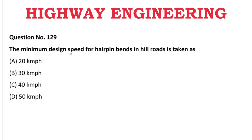Next question: The minimum design speed of hairpin bends on hill roads is — A: 20 km/h, B: 30 km/h, C: 40 km/h, D: 50 km/h. The correct answer is 20 km/h.